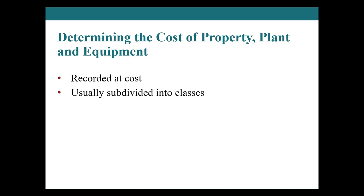We typically divide PP&E into a couple of different subclasses to demonstrate that we understand the particularities of different subsets of PP&E. These classes include land, land improvements, buildings, and equipment, and they're how most of the rest of this chapter is going to be organized.